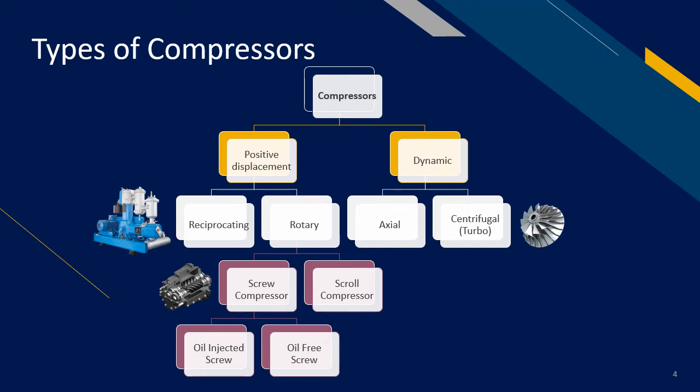Now, what are the common compressor technologies available in the market? There are two types: positive displacement and dynamic. For positive displacement, the air is compressed using a moving part which compresses the air into a smaller space. For example, reciprocating compressors. These compressors are known to be one of the older technologies, but till today are still considered a relatively efficient system.